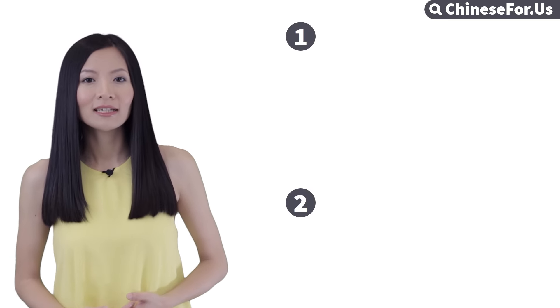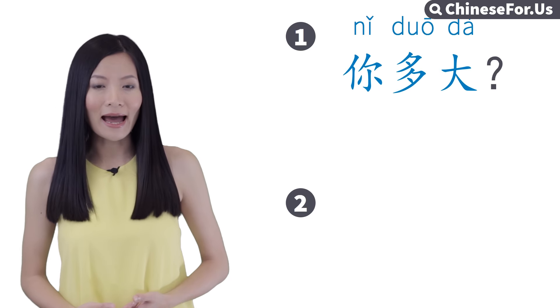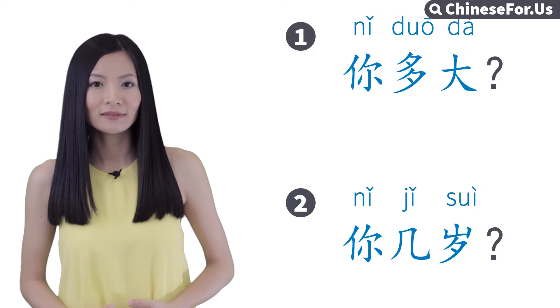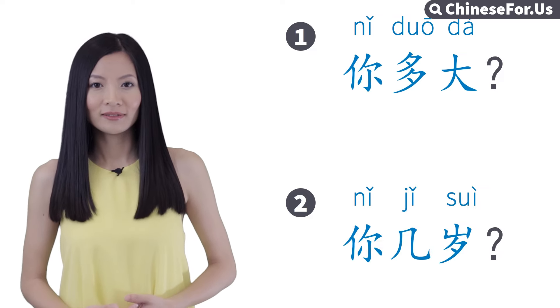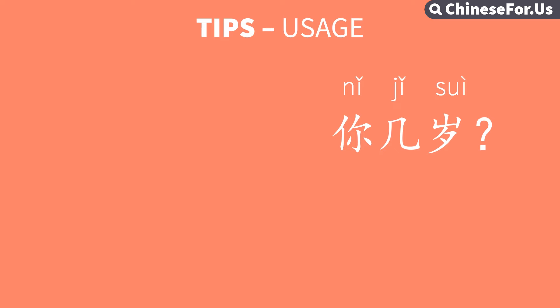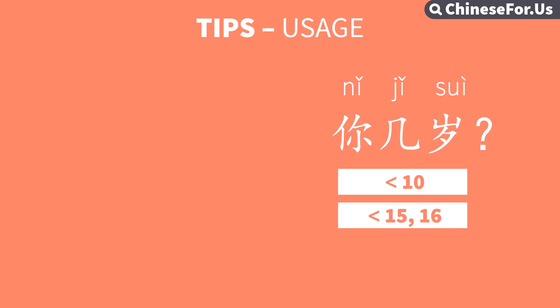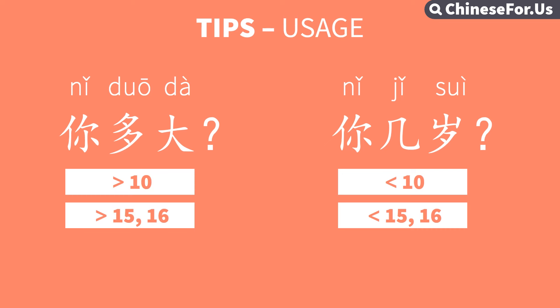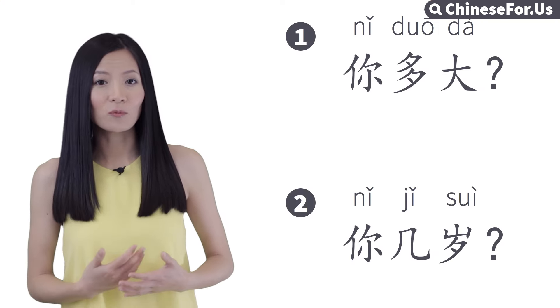And when it comes to asking a person's age, there are two ways. 你多大? And 你几岁? 你几岁 is for asking younger kids, roughly under 10 years old or no more than about 15 or 16. And 你多大 is for asking people older than that, except for people who are around or older than 60 years old when you want to be polite to them. Let's take a look at them one by one.